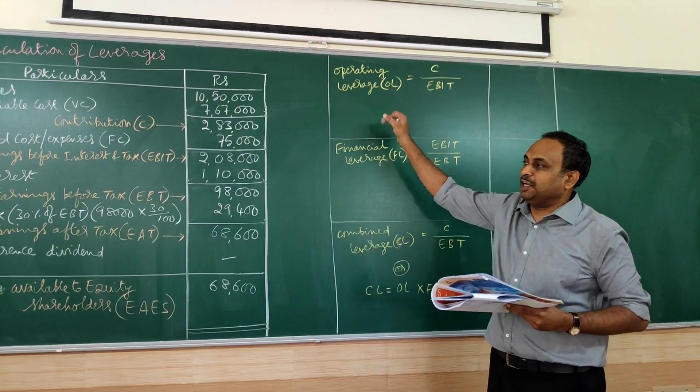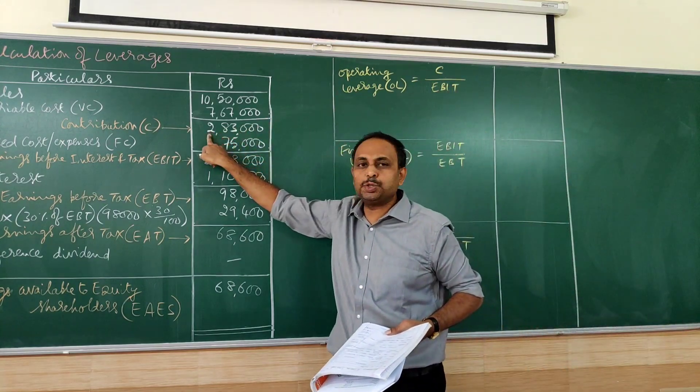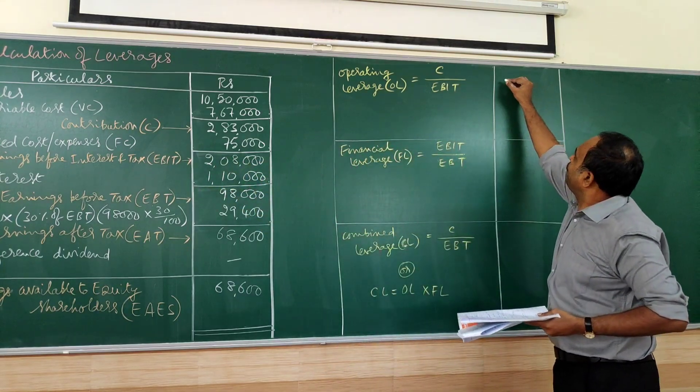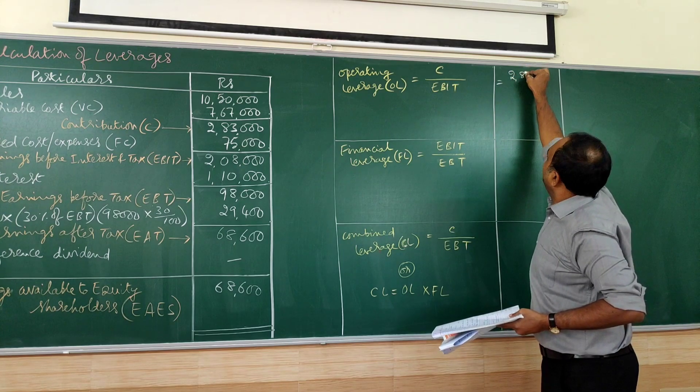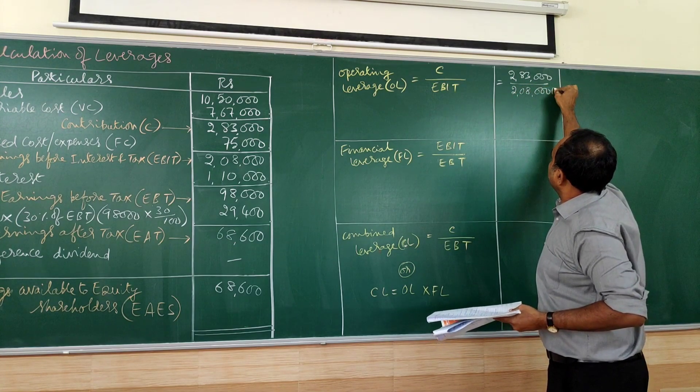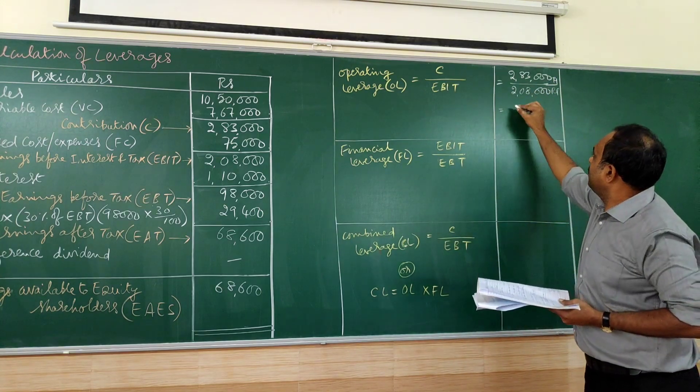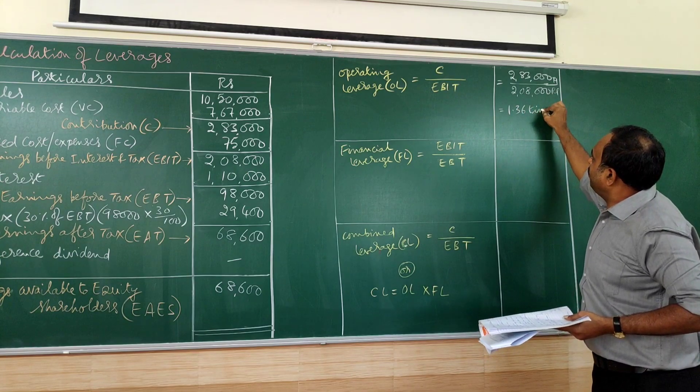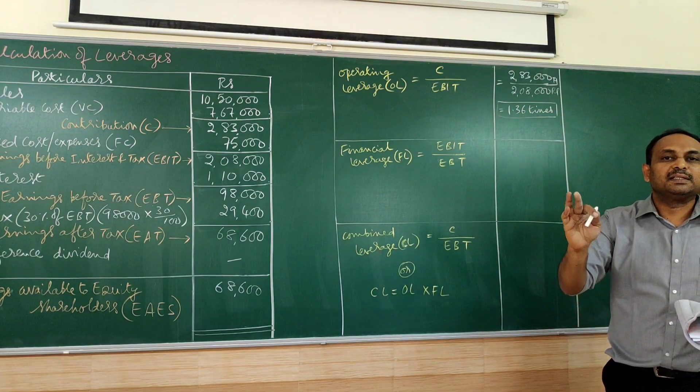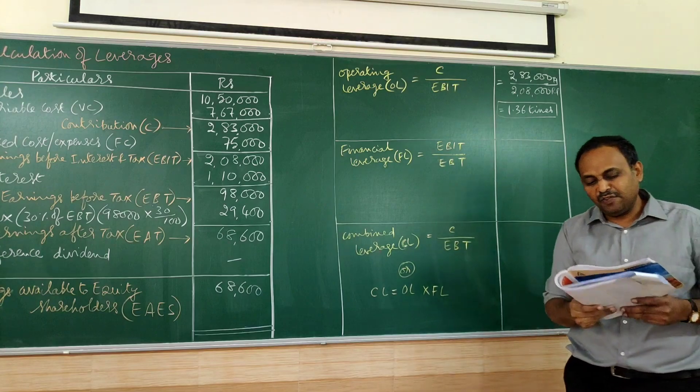What is connected to operating leverage? You can see the formula here: C divided by EBIT. C is contribution. EBIT is earning before interest and tax. I will take that now: 283,000 divided by 208,000. So if you divide, you are going to get 1.36. This is 1.36 times, not in percentage. What is the significance of this?